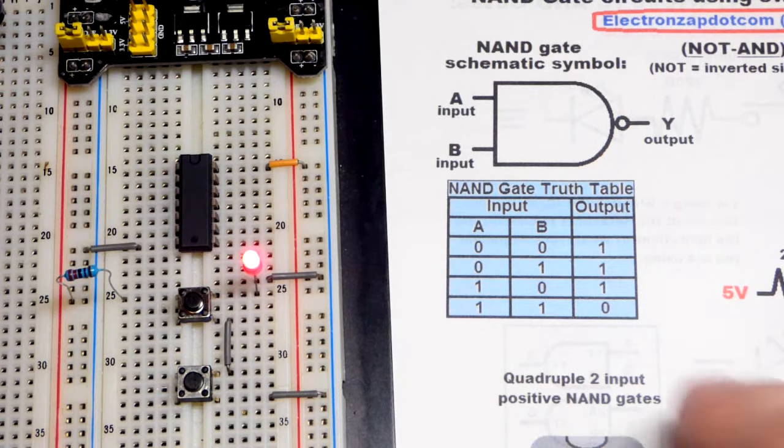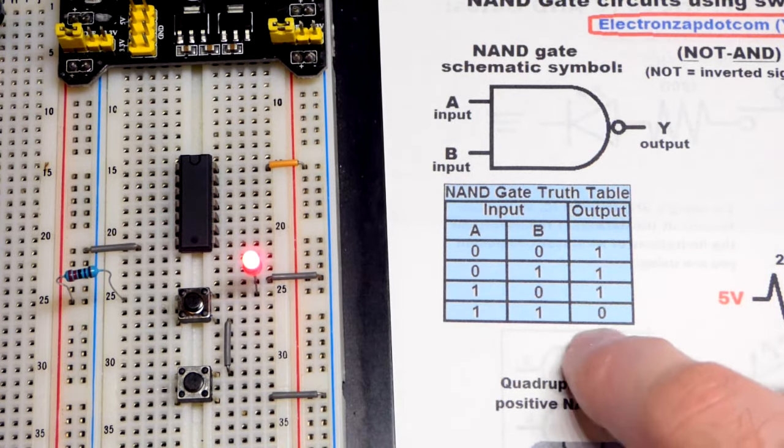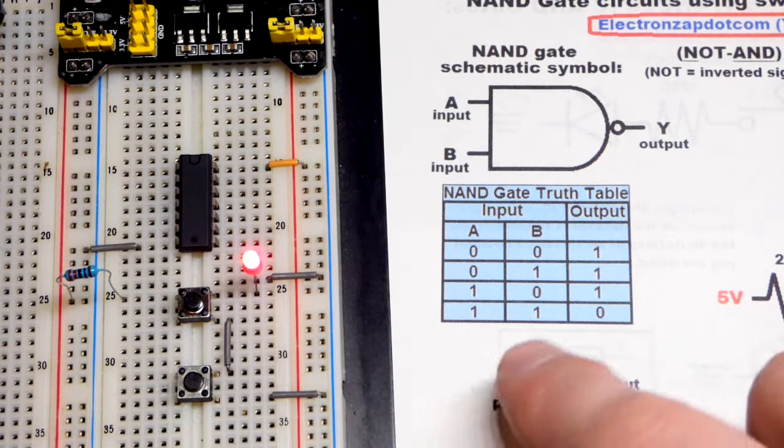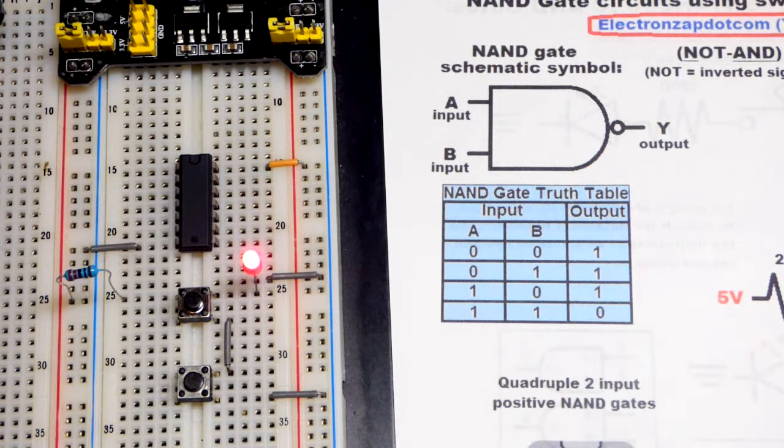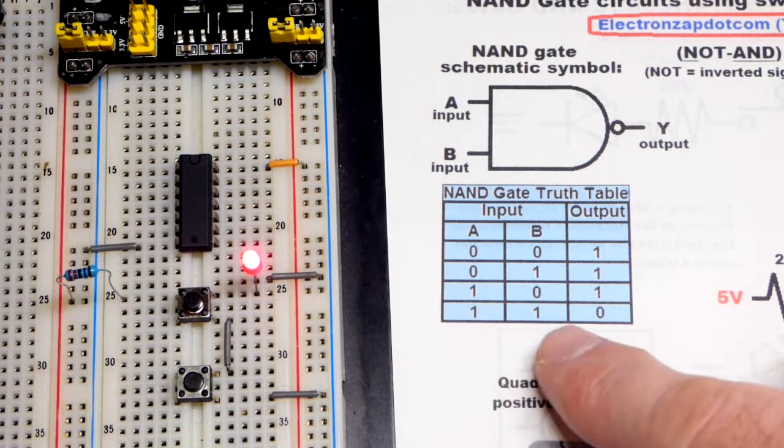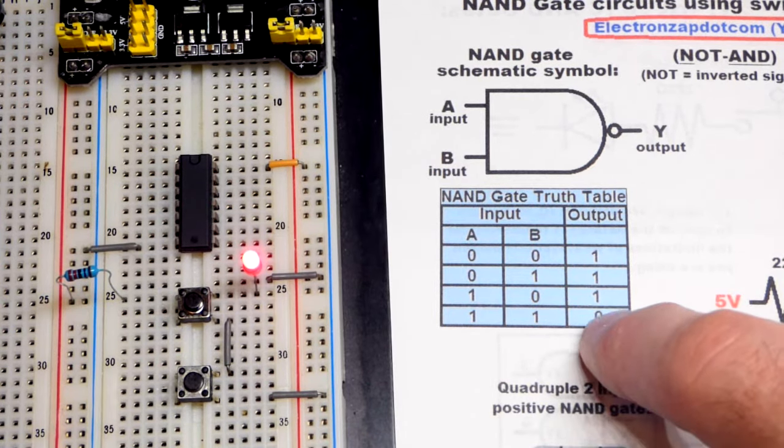You may build something like this at some point but mostly it is a demonstration. So we have a high output, high output, high output. The only time we have a low output is if we have two high inputs. So we have two inputs. That's if there's a two input NAND gate which this is. There's NAND gates with more inputs but the main takeaway is all the inputs have to be high for the output to be low.